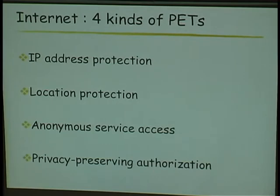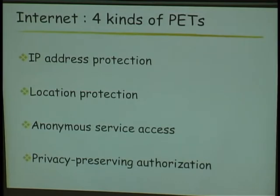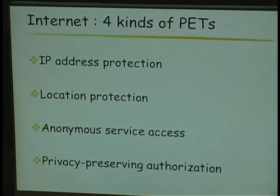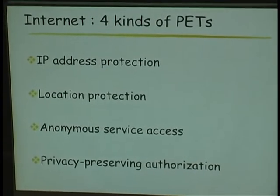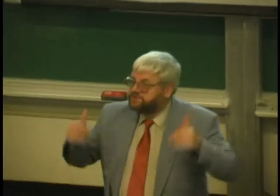On the internet we are looking at four kinds of privacy-enhancing technology paths: to protect the IP address, to protect the location of the user, to give anonymous access to some services, and to preserve privacy while making authorization. This doesn't mean it covers everything for privacy — for instance, I do not consider what has to be done at the server level, the customer's system, or at the enterprise level where employee files are stored. That could be another interesting talk.